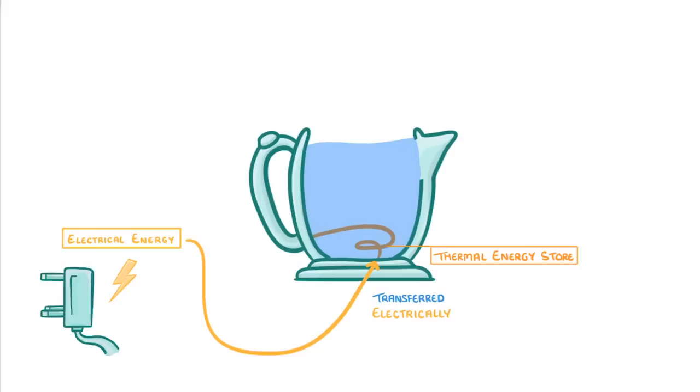Which basically means that the flow of electricity warms the metal heating element. The heating element then, in turn, transfers the energy over to the water's thermal energy store. And after a short while, we have a boiled kettle.